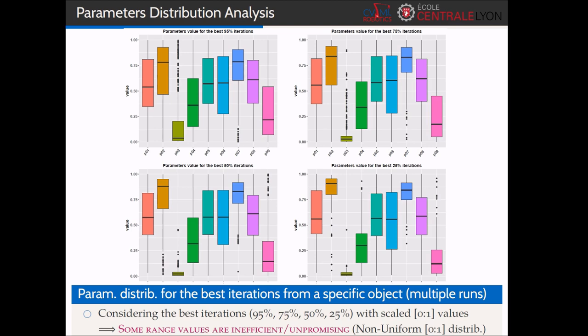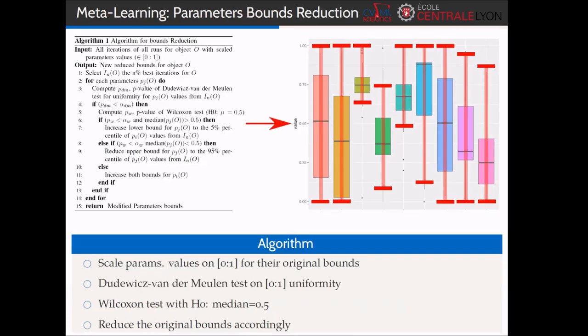We want to estimate them in order to reduce the initial parameter bounds accordingly, thus reducing the search space and increasing the Bayesian optimization efficiency for future similar tasks. When considering only the best iterations, neutral boundaries of the Bayesian optimization for normalized parameters' values lead to uniform 0-1 distribution. If not, that means that some areas are more explored and some unpromising regions are usually discarded.